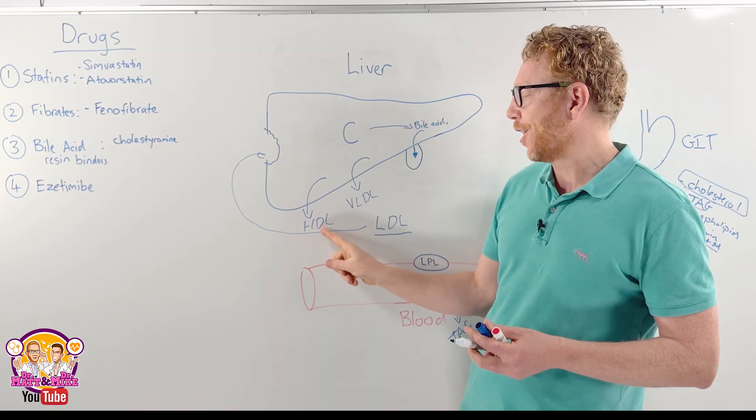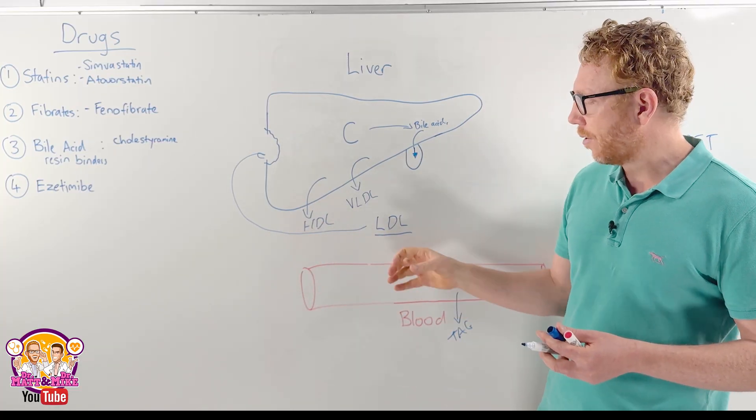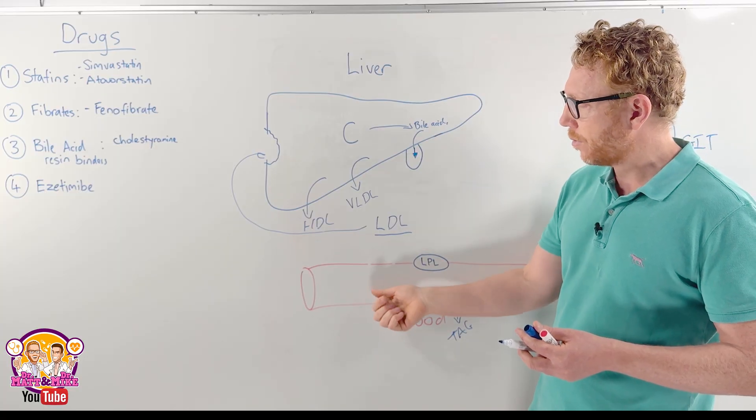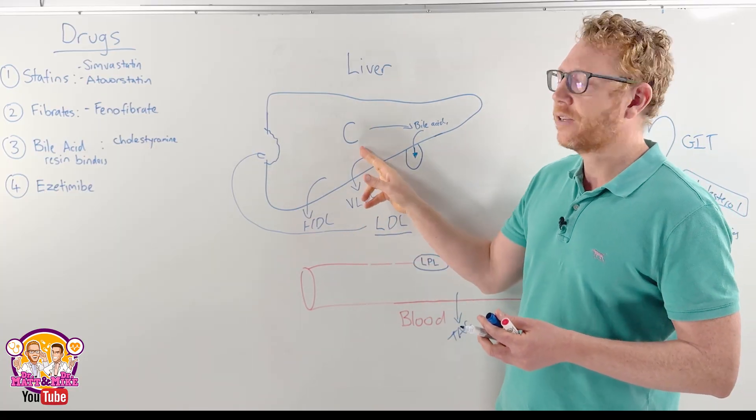So high-density lipoproteins or HDLs go around the body and they almost reclaim the cholesterol in tissue and in other parts. So they can go into blood vessels, they can go into other areas and kind of take cholesterol back and return it back to the liver.